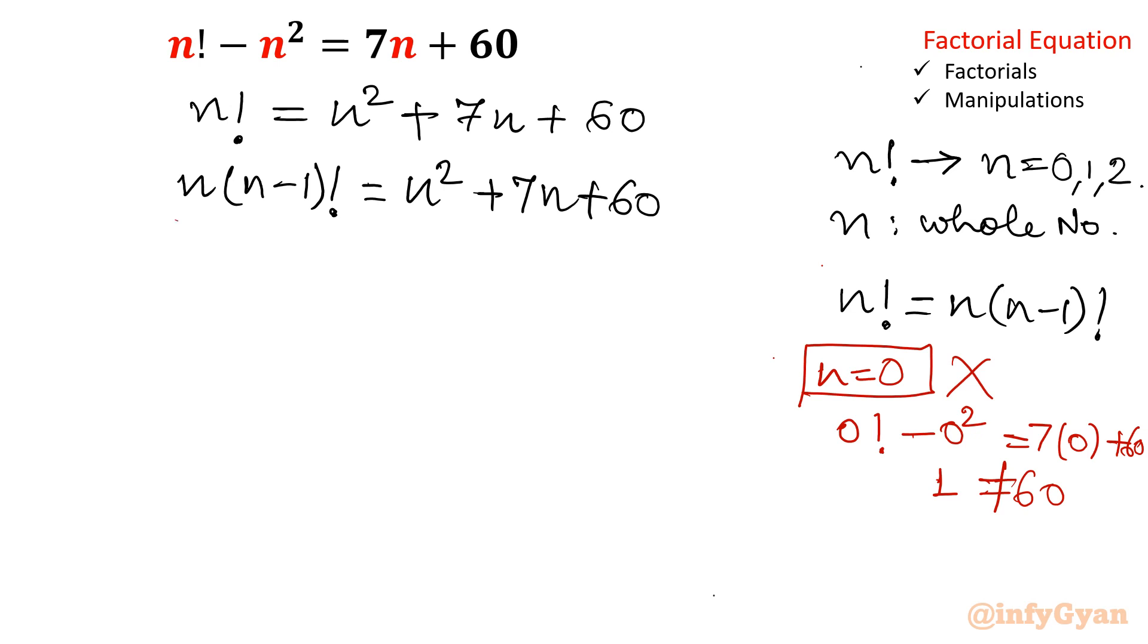So what we will do we will divide both sides by n. Let us divide. Once I will divide then few terms will get cancelled out. This term will get cancelled.